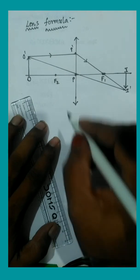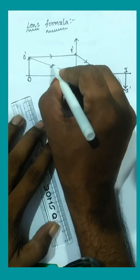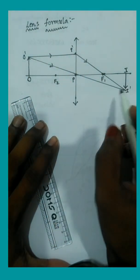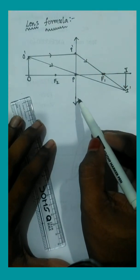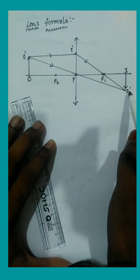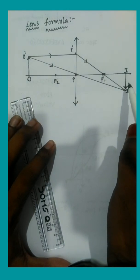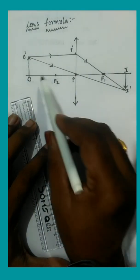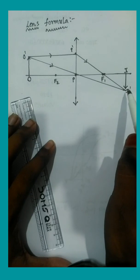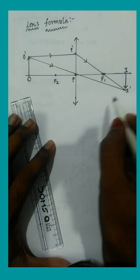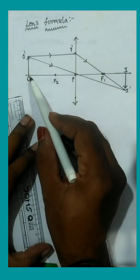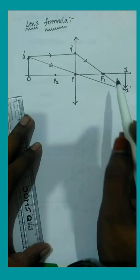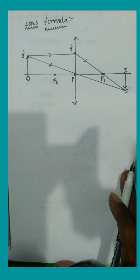Here we can observe the image — this point is called I'. Whenever we use a biconvex lens, the image is inverted and real. Also, the size of the image is smaller than the size of the object. This is the basic description of the concept.